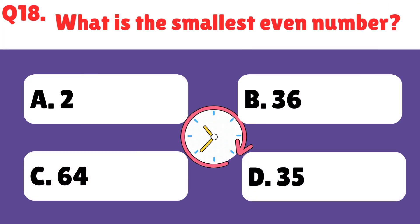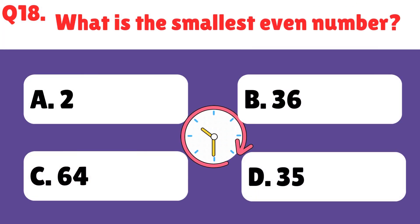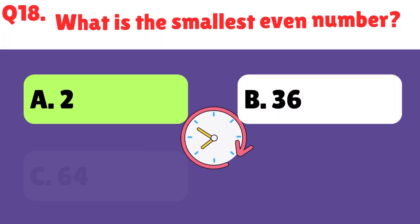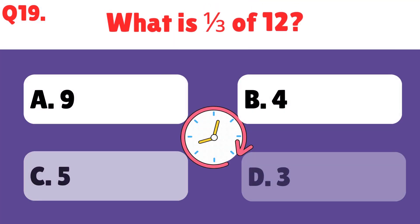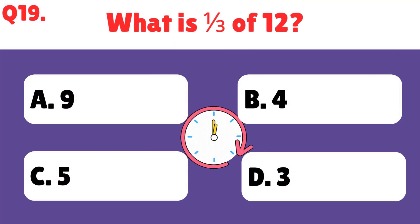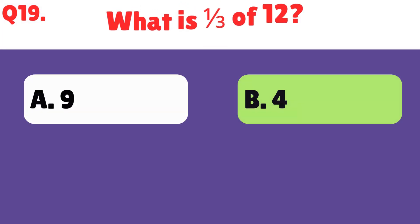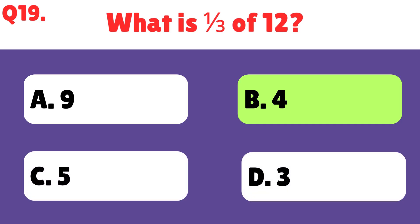What is the smallest even number? The smallest even number is 2. What is 1 third of 12? 1 third of 12 is 4.